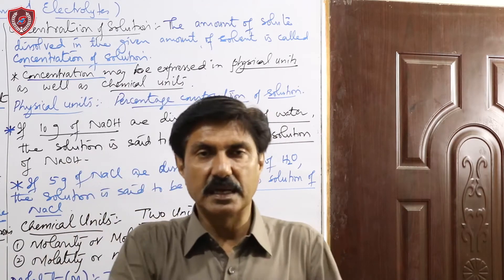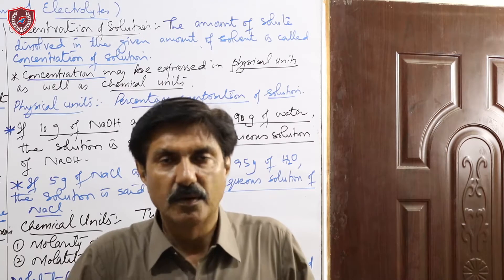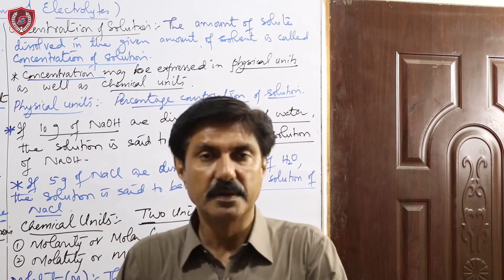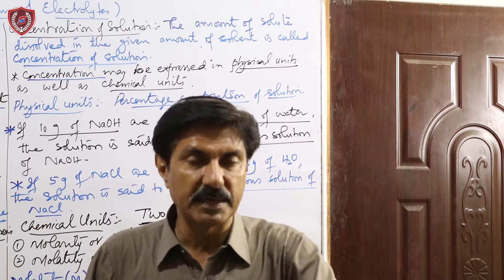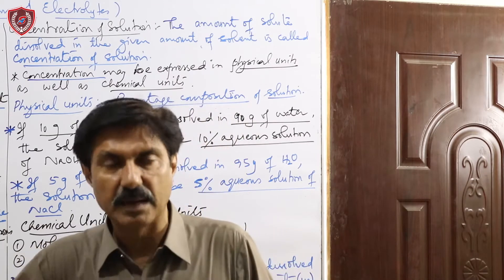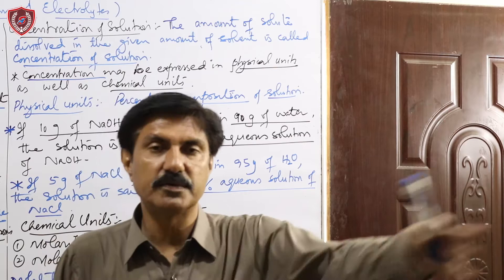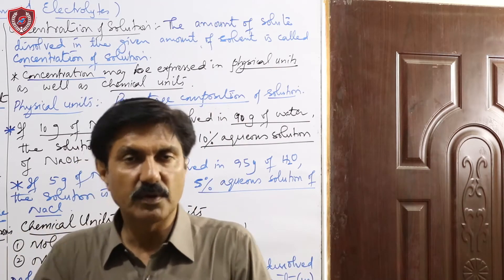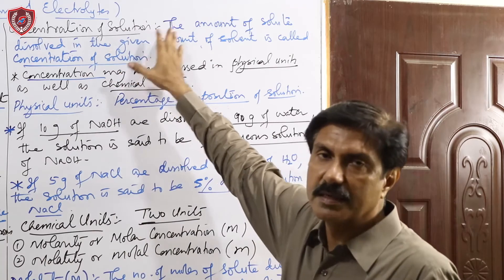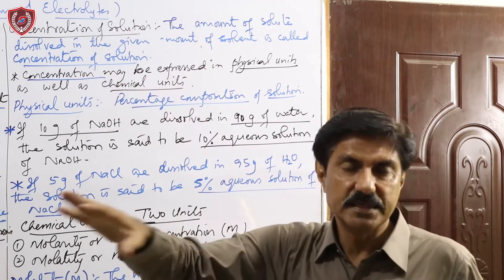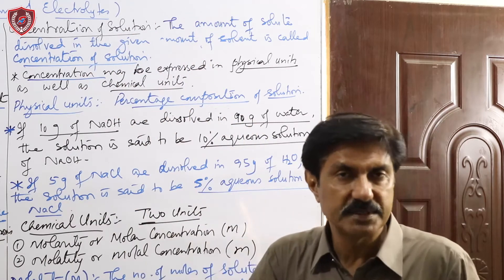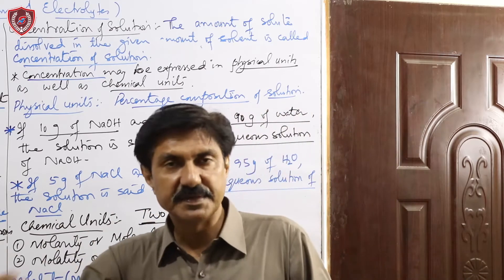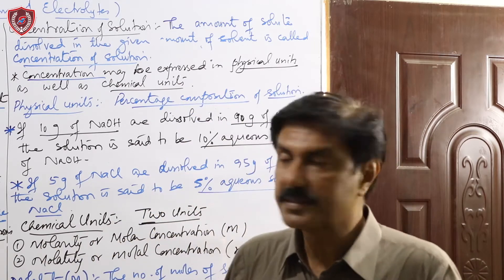مثال: 100 ml پانی میں 10 gram نمک ڈالا — یہ dilute solution۔ اسی 100 ml پانی میں 20 gram نمک ڈالا — یہ concentrated solution۔ Concentration of solution is the amount of solute present in the given amount of solvent. Concentration کو دو طرح کے units میں express کرتے ہیں: physical units اور chemical units۔